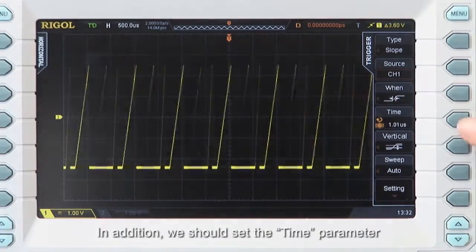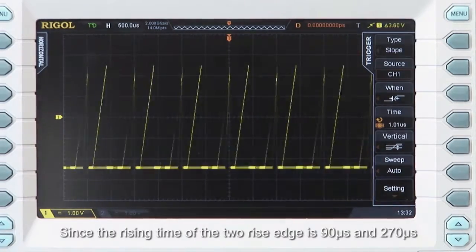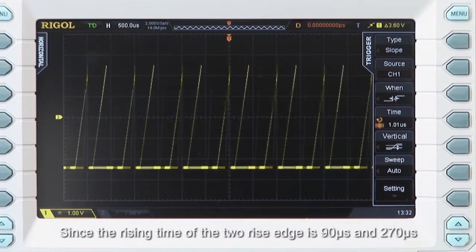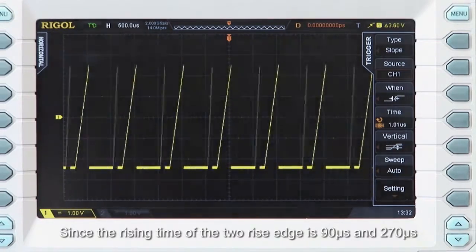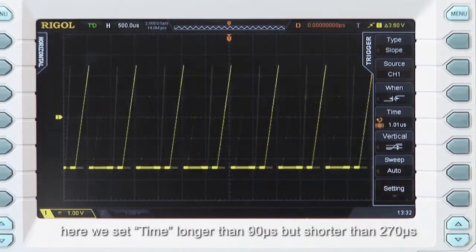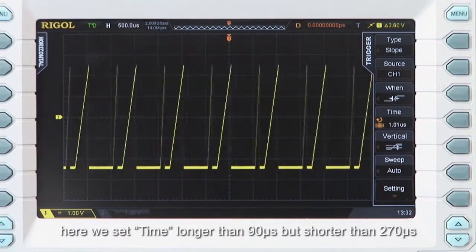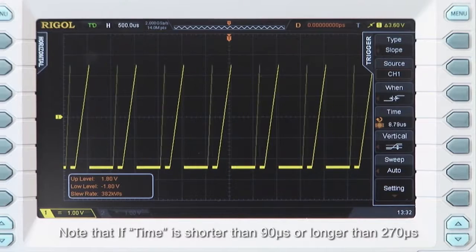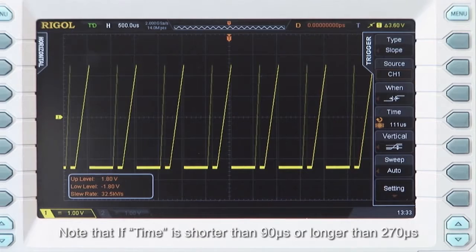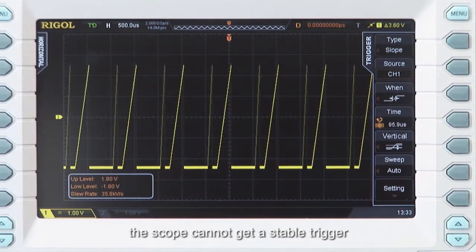In addition, we should set the time parameter. Since the rise time of the two rising edges are 90 microseconds and 270 microseconds, we could set the time longer than 90 microseconds but shorter than 270 microseconds. Note that if the time is shorter than 90 microseconds or longer than 270 microseconds, the scope cannot get a stable trigger.